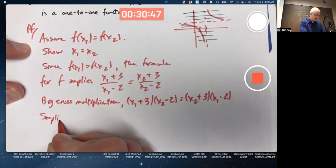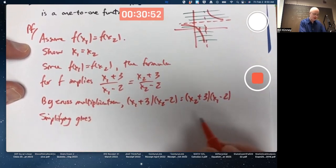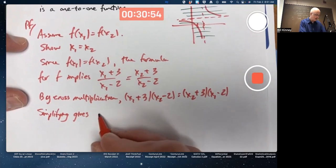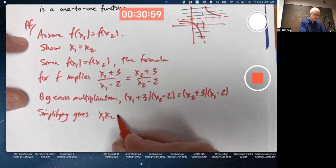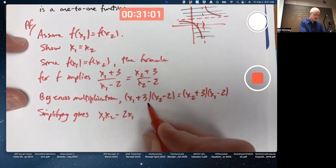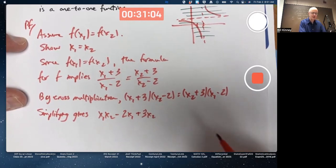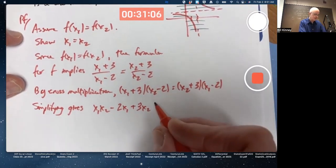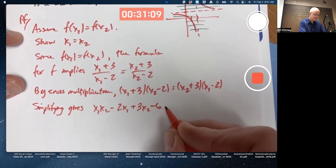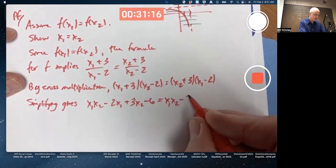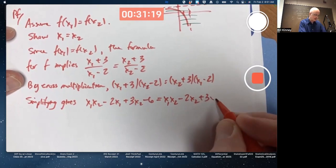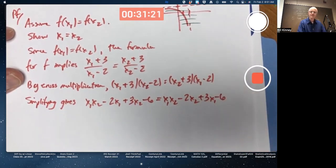Simplifying gives what? Foil on both sides, right? x1 times x2 is first times first. Outside times outside is minus 2x1. Inside times inside is plus 3x2. Careful, you got two different variables here. Last times last is minus 6. Do it on the other side, too. x2 times x1 is x1 times x2. Then I have a minus 2x2 and a plus 3x1 and a minus 6.